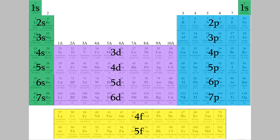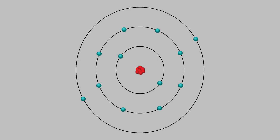To begin, let's remember a bit about the structure of atoms, which we learned about in previous videos. As you might recall, an atom has a positively charged nucleus in the center, and shells of electrons around it.